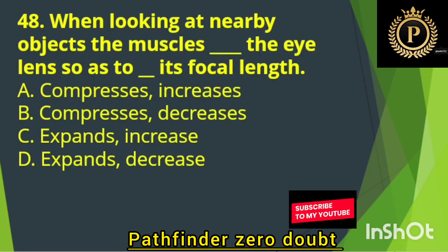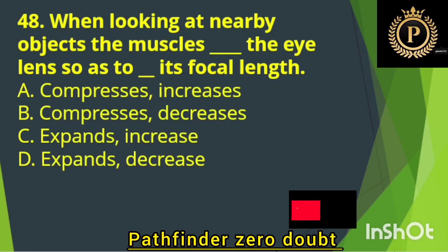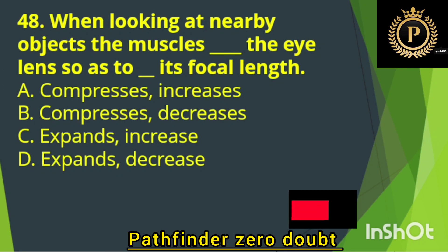When looking at a nearby object, the muscle compresses the eye lens so as to decrease its focal length — Option B: Compresses and decreases.